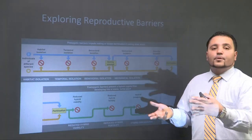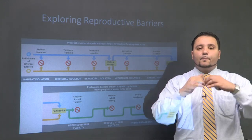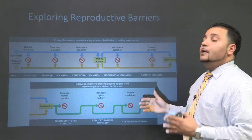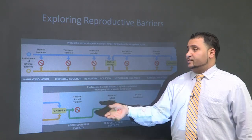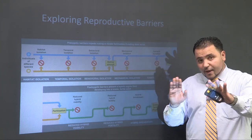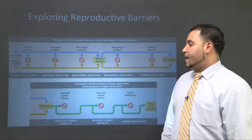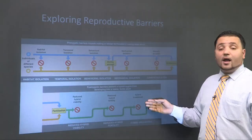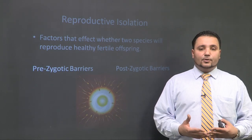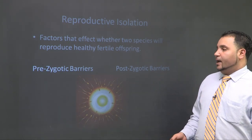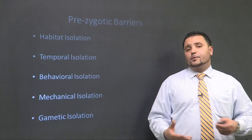Now let's explore the reproductive barriers. The top section shows us everything that happens before sperm and egg fuse to become a zygote — we call these pre-zygotic barriers. Anything on the bottom is going to be post-zygotic barriers. We have habitat isolation, temporal isolation, behavioral isolation, then after a mating attempt: mechanical isolation and gametic isolation. Once we have fertilization, the post-zygotic barriers include reduced hybrid viability, reduced hybrid fertility, and hybrid breakdown.